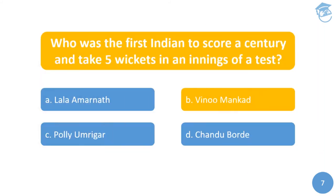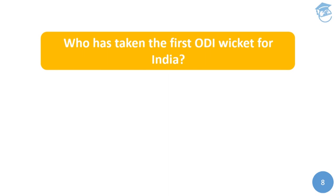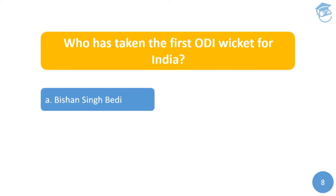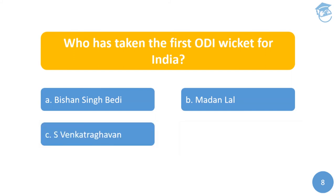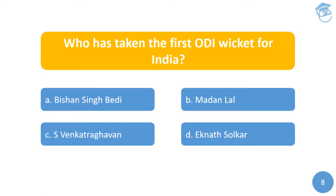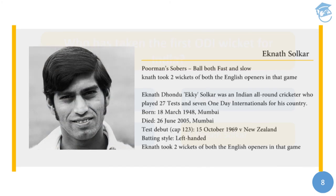The eighth question: Who took the first ODI wicket for India? Options are: A) Bishan Singh Bedi, B) Madan Lal, C) S. Venkataraghavan, or D) Eknath Solkar. The answer is Eknath Solkar, a great all-rounder known as the 'poor man's Sobers' for his ability to bowl both fast and slow. He took the wicket of Dennis Amiss, the English opener, in India's first ODI in 1974, bowling him LBW for 20 runs. Solkar took both wickets of the English openers in that game.